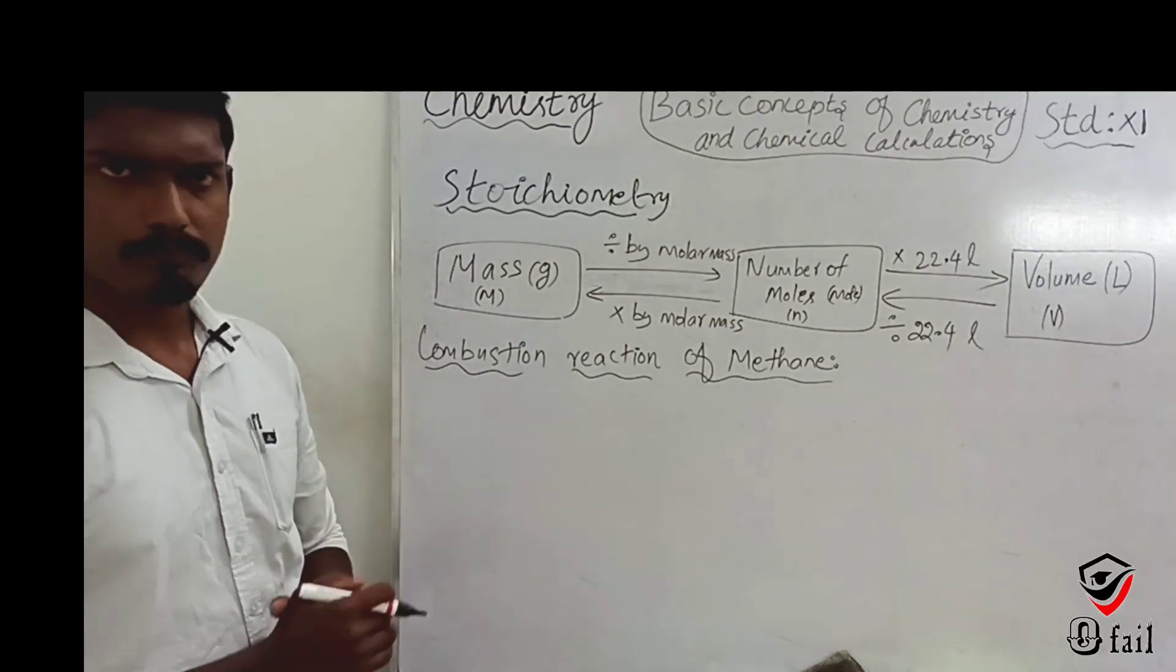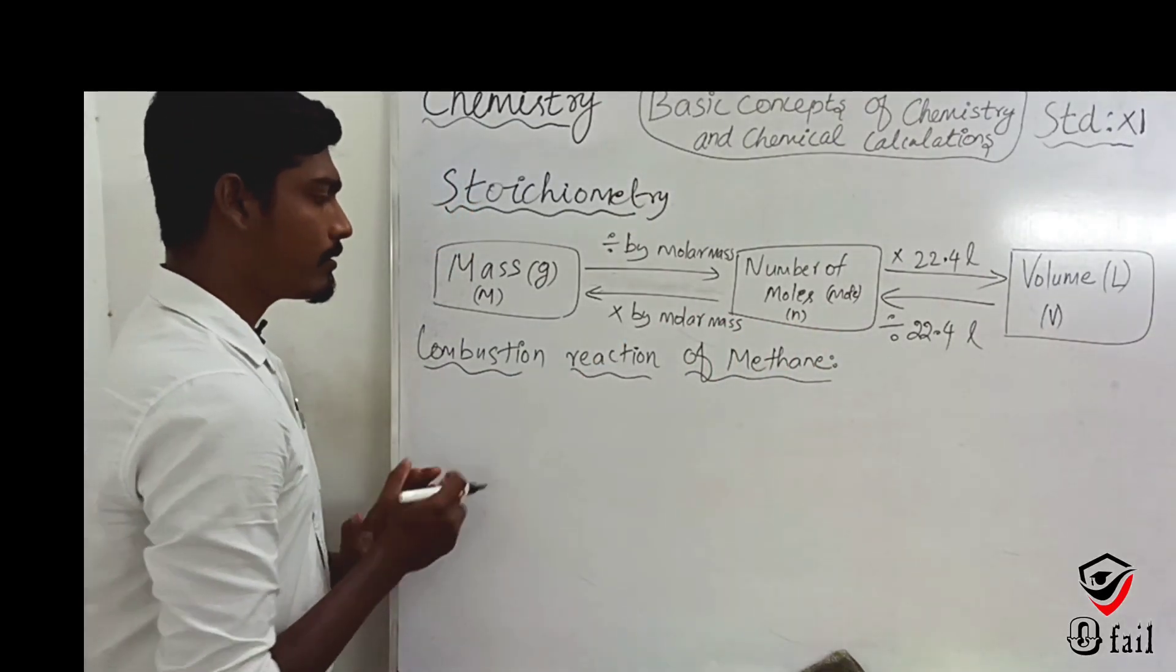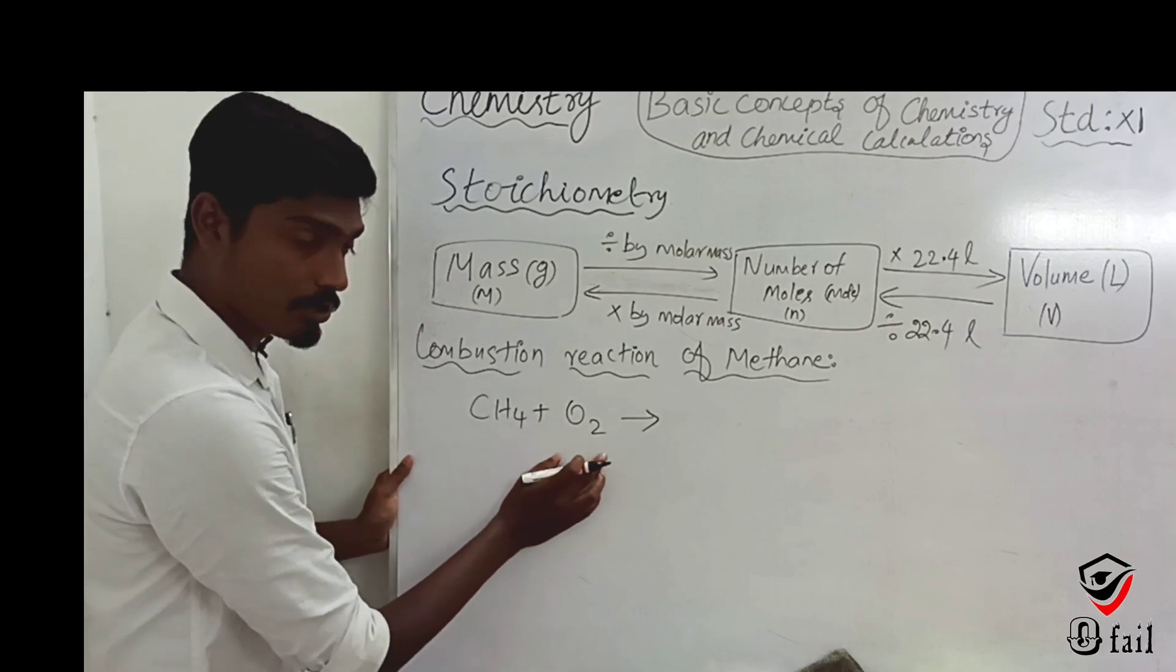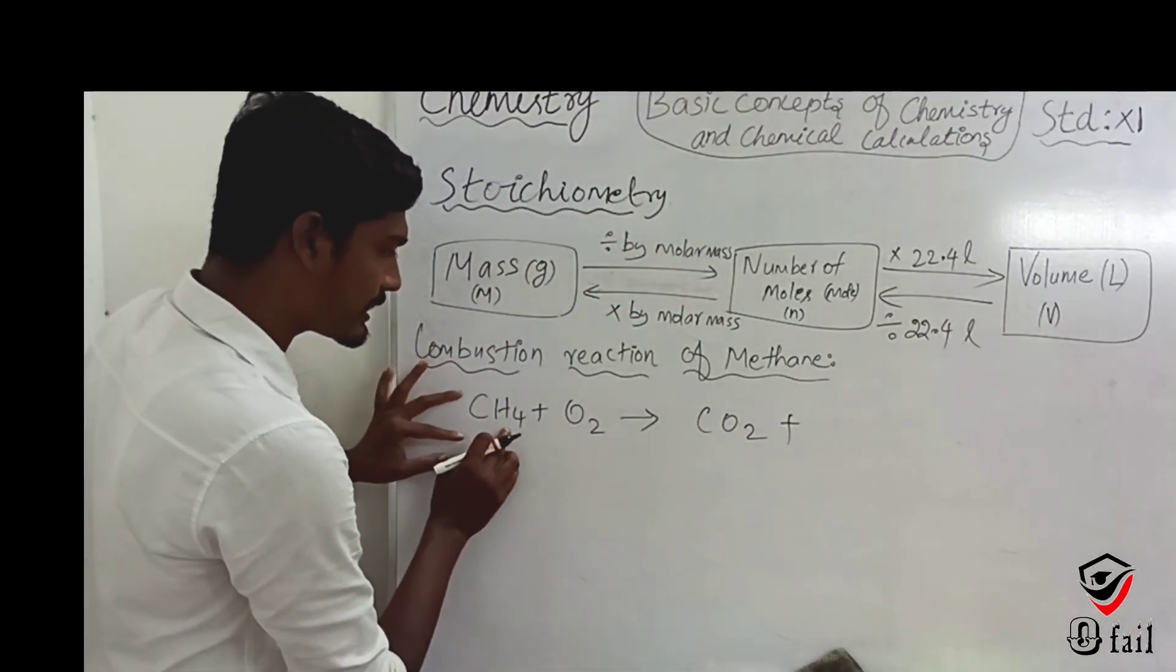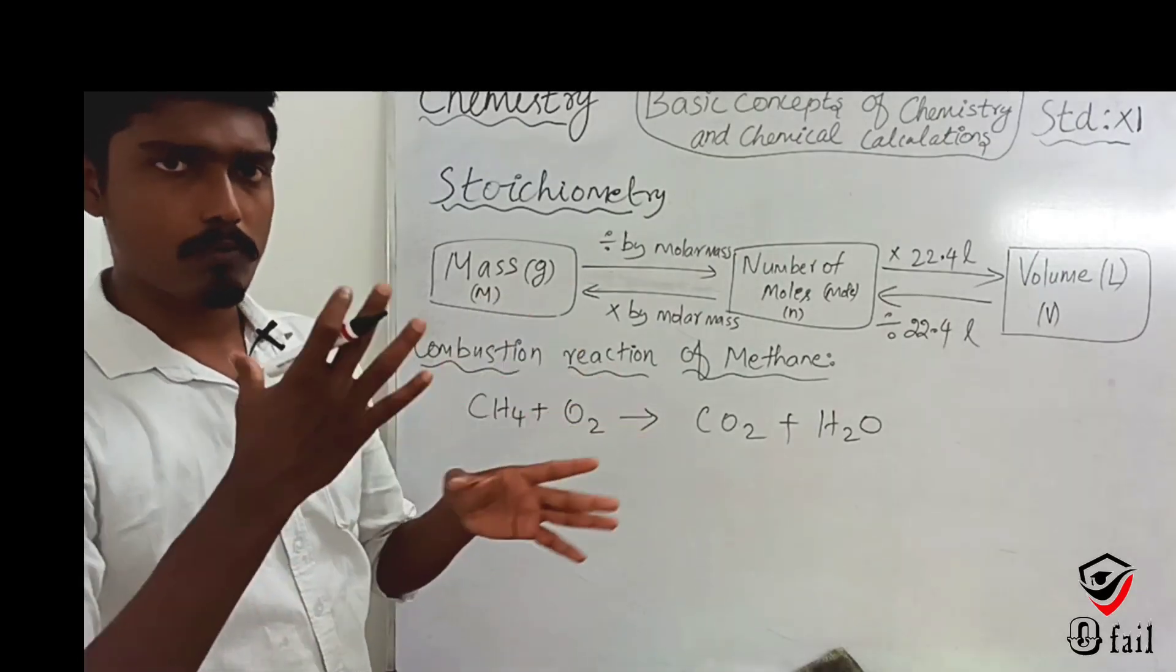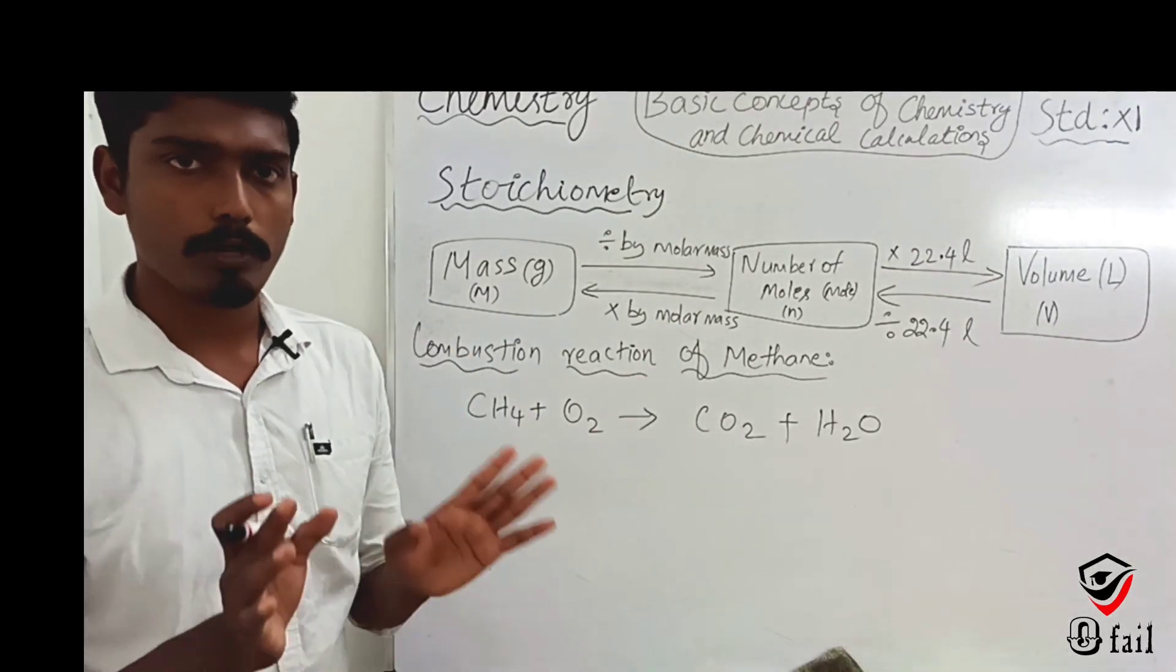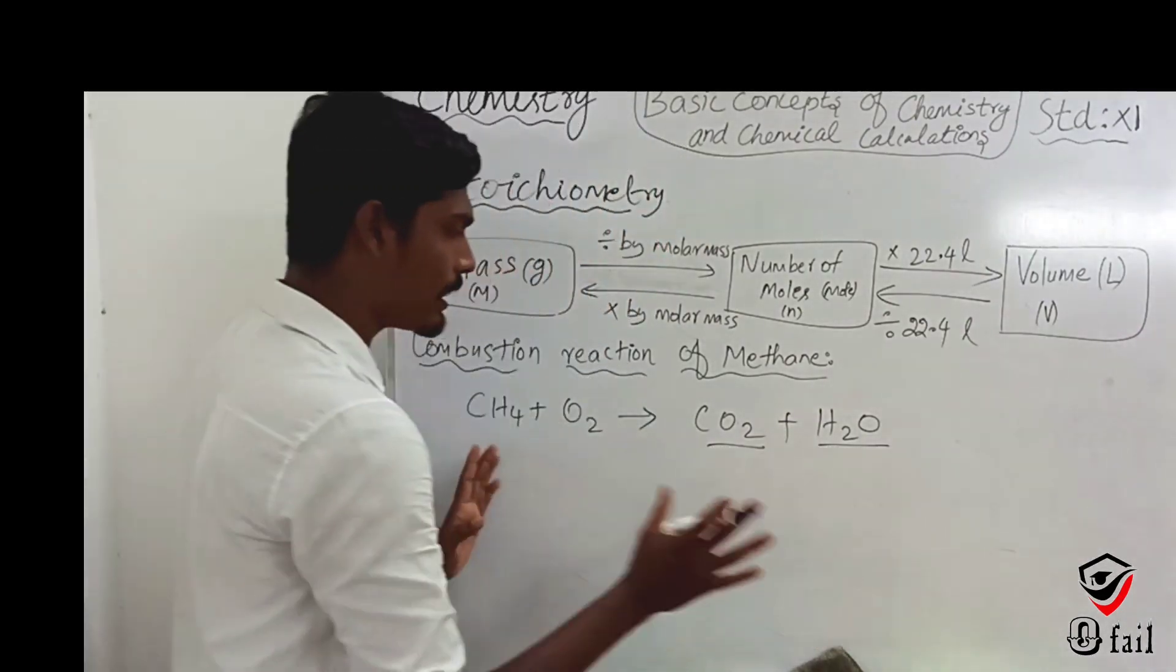Let's look at the combustion reaction of methane. Methane is CH4. Combustion reaction means reacting with oxygen. CH4 plus oxygen gives CO2 and water as products. Carbon reacts with oxygen to give carbon dioxide, and hydrogen reacts with oxygen to give water.